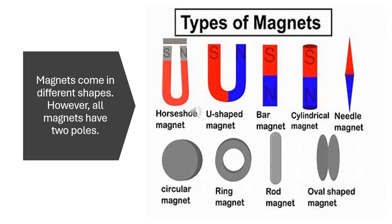There are so many types of magnets, like the horseshoe magnet, U-shaped magnet, bar magnet, cylindrical magnet, needle magnet, circular magnet, ring magnet, rod magnet, or an oval-shaped magnet.